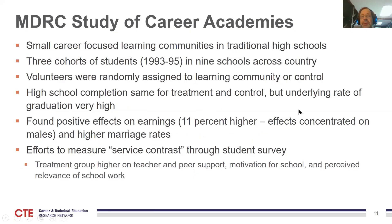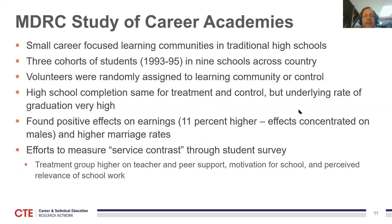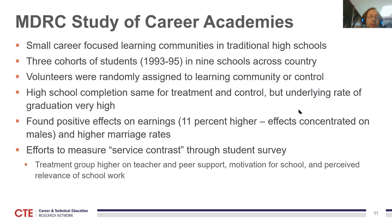The final case study is the MDRC Study of Career Academies — small career-focused learning communities within traditional high schools. They looked at three cohorts of students entering in 1993, 1994, and 1995, usually entering in 9th or 10th grade. This was a set of volunteers who applied and then had random assignment — some students were admitted and some were not. High school completion was the same for the treatment and control group, but in most of these high schools the graduation rate was already very high, unlike in Connecticut where there was a more negatively selected population with lower baseline graduation rates.